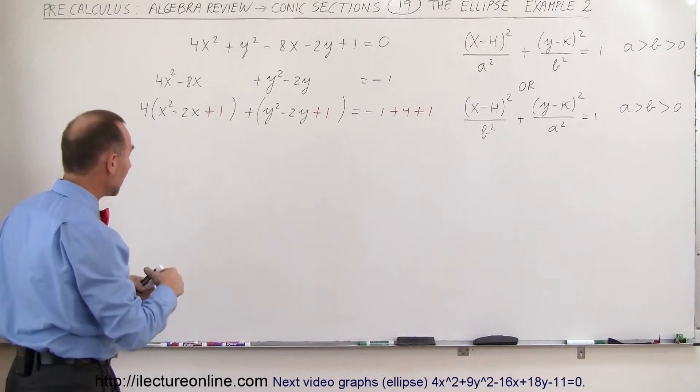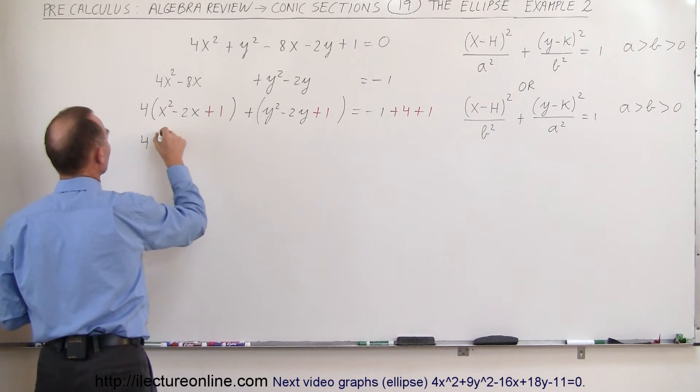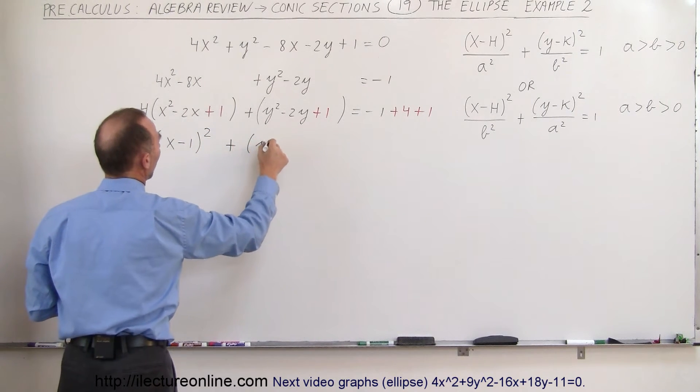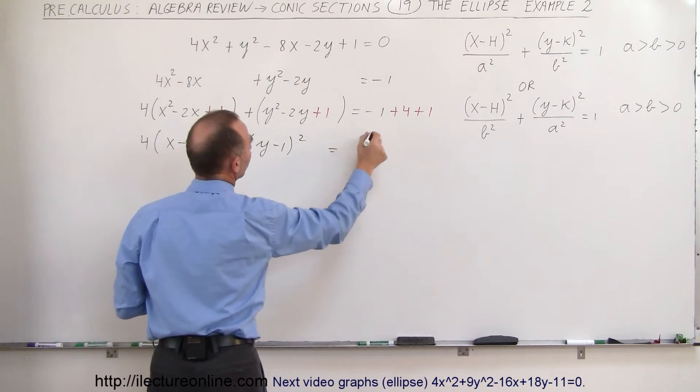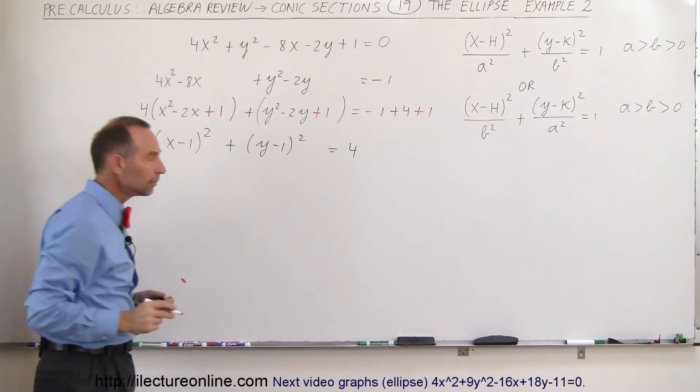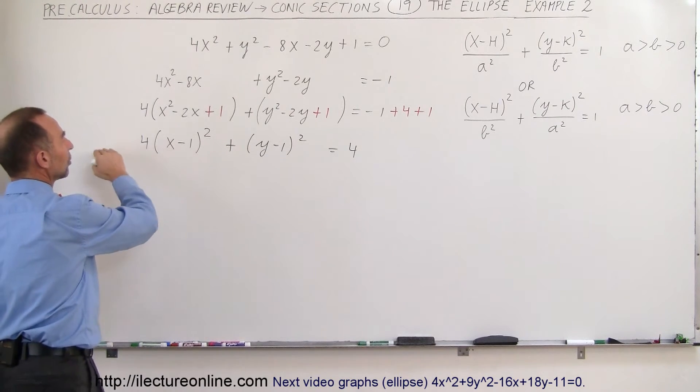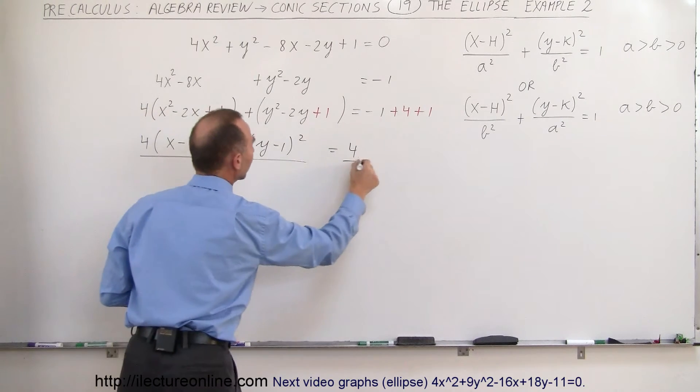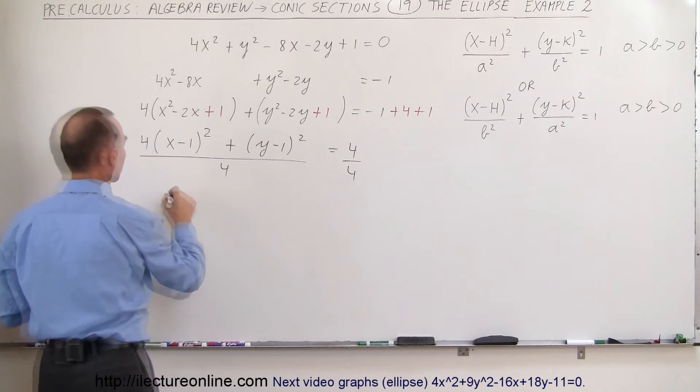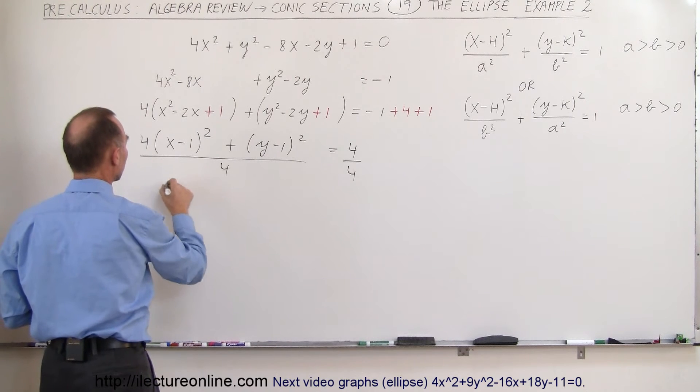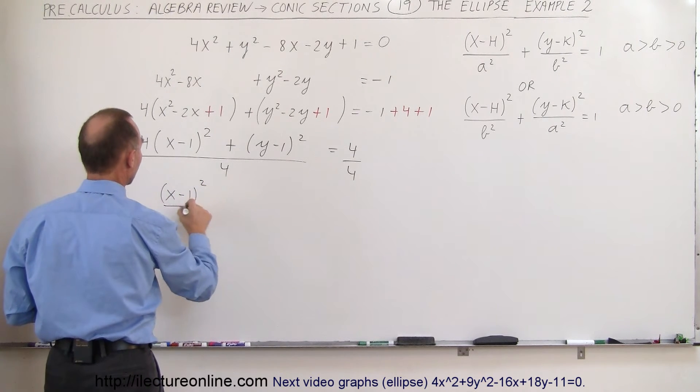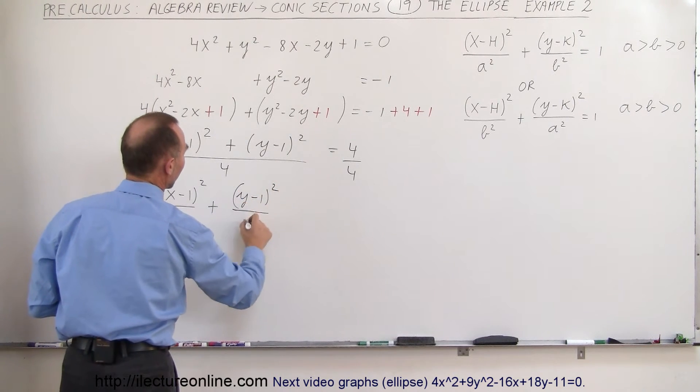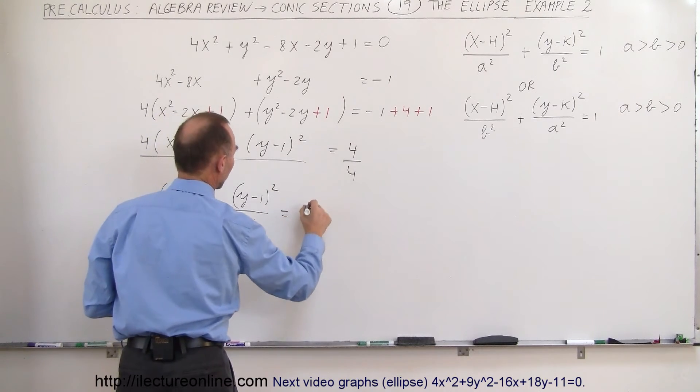Now we're ready to go ahead and rewrite it in this form. We can write this as 4 times x minus 1 quantity squared plus y minus 1 quantity squared is equal to 4. Now I want to get rid of this coefficient here, so I'm going to divide the whole equation by 4. Divide the left side by 4, divide the right side by 4.